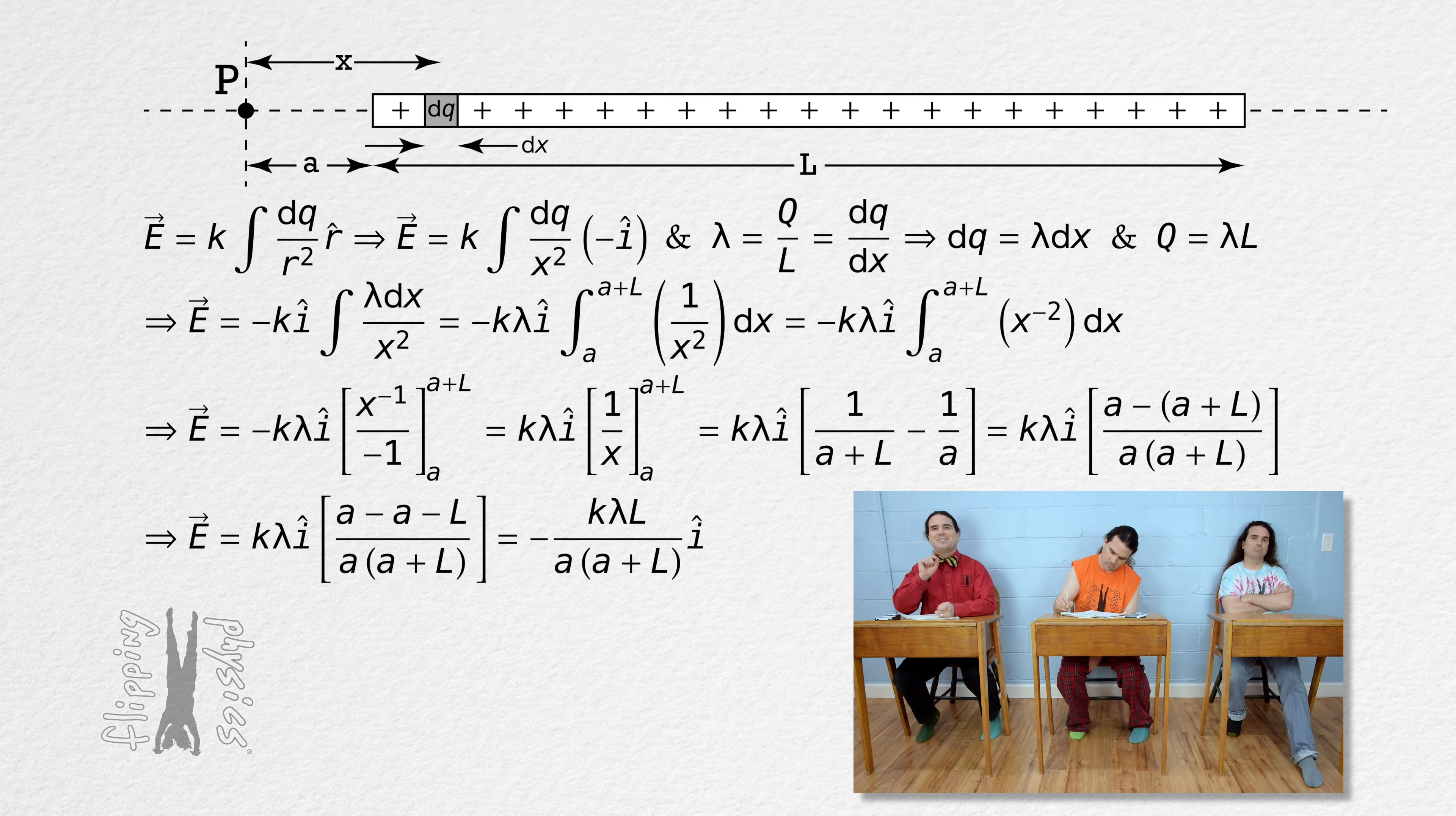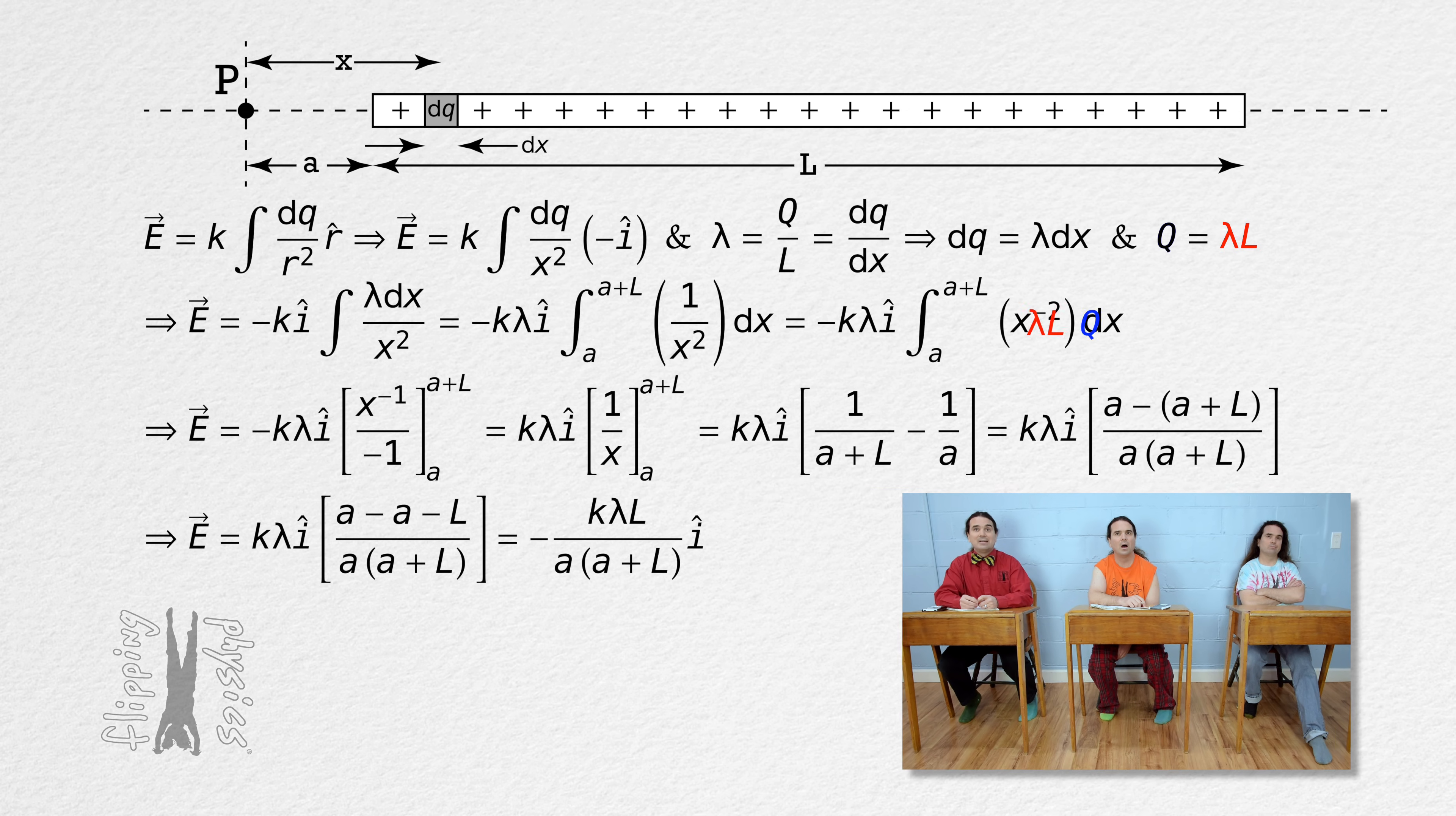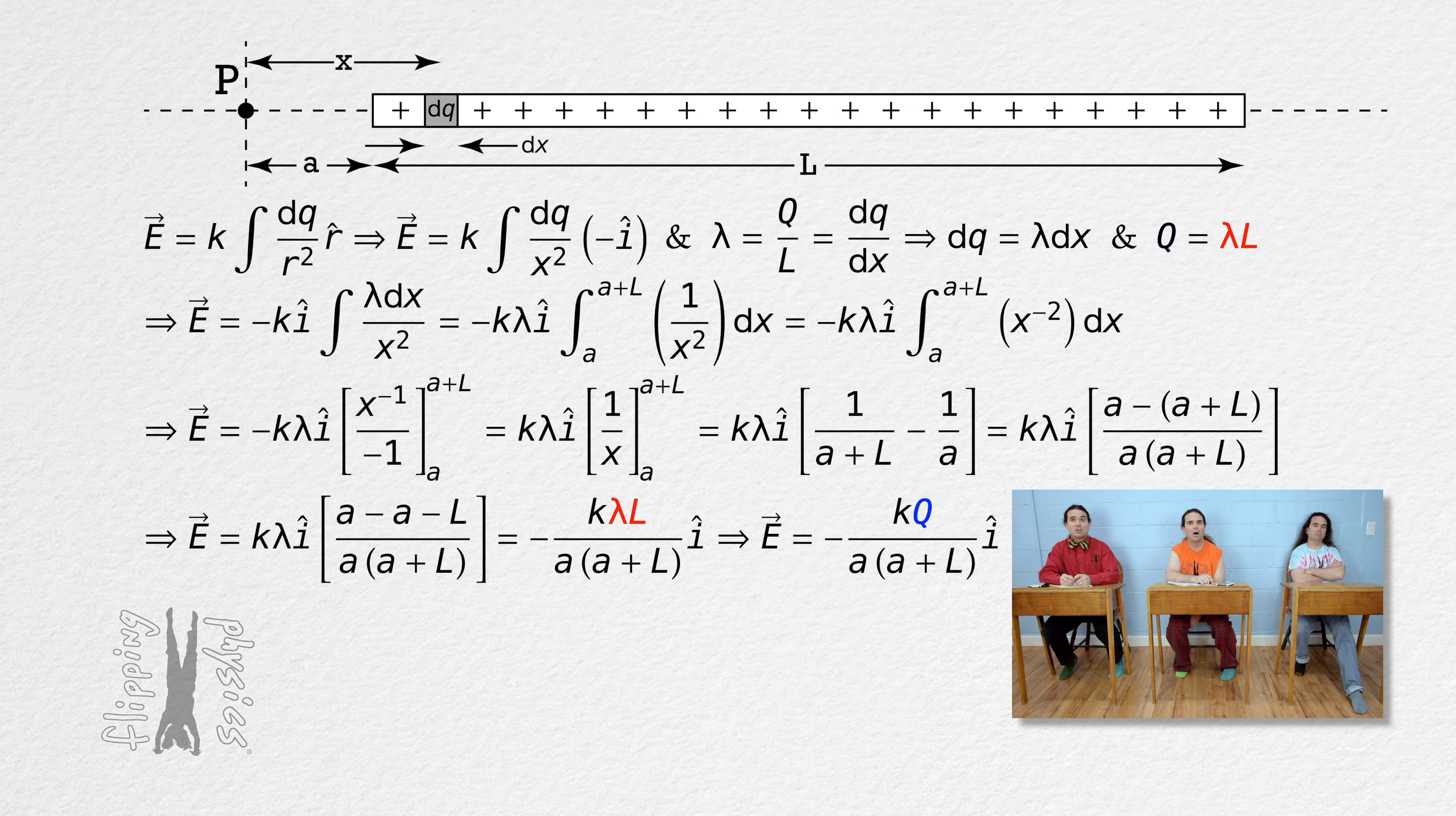Actually, we could do one more simplification. Previously I showed that the total charge on the rod, capital Q, equals linear charge density times the length of the rod, so we can substitute the total charge on the rod into the electric field equation. I think that's it.